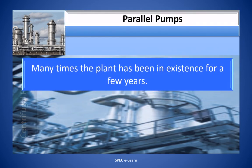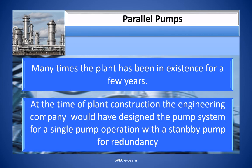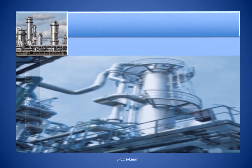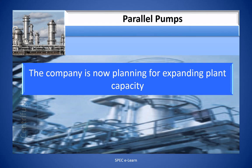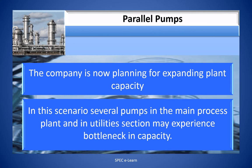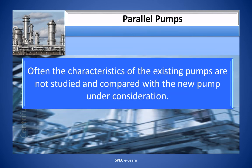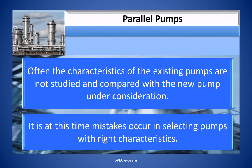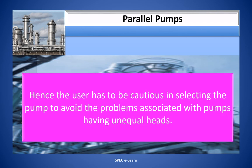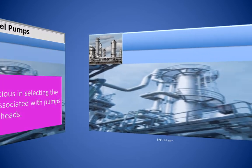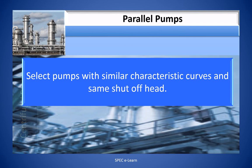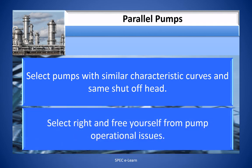Many times, the plant has been in existence for a few years. At the time of plant construction, the engineering company would have designed the pump system for a single pump operation with a standby pump for redundancy. The company is now planning for expanding the plant capacity. In this scenario, several pumps in the main process plant and in utility section may experience bottleneck in capacity. Often, the characteristics of the existing pumps are not studied and compared with the new pump under consideration. It is at this time mistakes occur in selecting the pumps with right characteristics. Hence, the user has to be cautious in selecting the pump to avoid the problems associated with pumps having unequal heads. Select pump with similar characteristic curves and same shut-off head. Select right and free yourself from the pump operational issues.